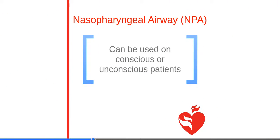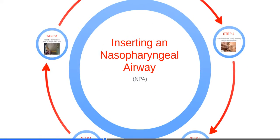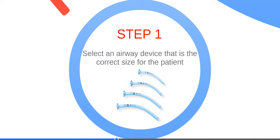The next device is an NPA, or nasal pharyngeal airway, and it can be used on either conscious or unconscious patients. Inserting an NPA is rather similar to inserting an OPA. First, select a size-appropriate device for the patient.